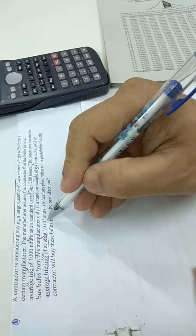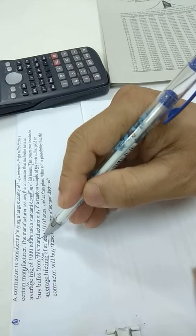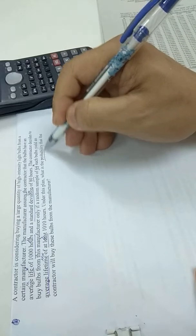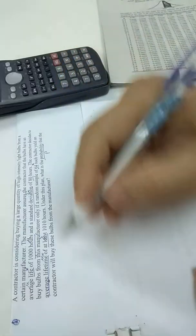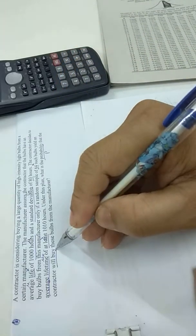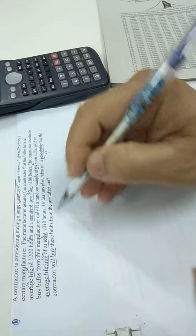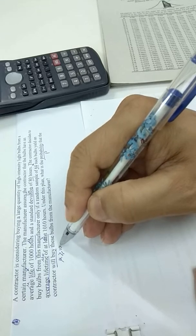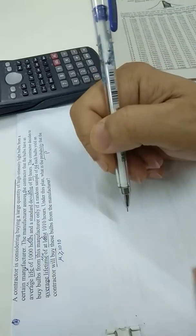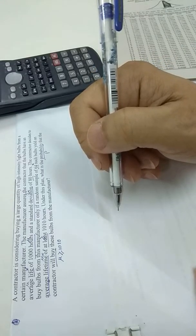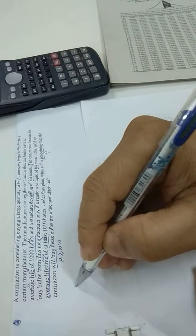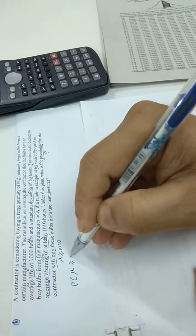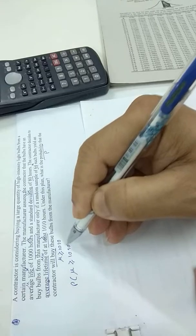So 1010 hours or higher, greater than or equal to. Under this plan, what is the probability that the contractor will buy from the manufacturer? That means if the mean is at least 1010 he will buy. So the probability that mean of X is at least 1010.